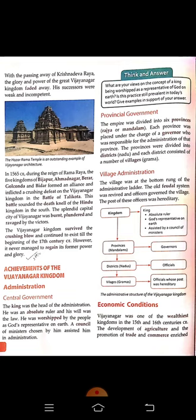The markets of Vijayanagara overflowed with foreign imports such as Arabian horses, Chinese silks, and Sri Lankan elephants. The main items of export were cotton cloth, sandalwood, rice, sugar, and spices. Import means things that came from outside into Vijayanagara's market, while export means items sold by the kingdom to other places.